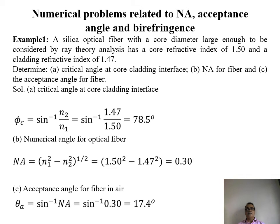Numerical aperture equals √(N1² − N2²) = √(1.5² − 1.47²), giving the numerical aperture value. For the acceptance angle: N0 × sin(θ_A) = NA, where N0 = 1. Therefore θ_A = sin⁻¹(NA). NA equals 0.3, and sin⁻¹(0.3) gives an acceptance angle of 17.4 degrees.